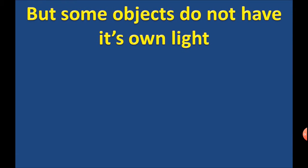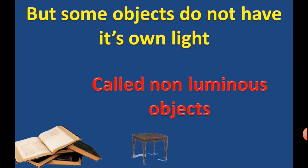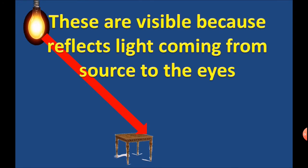But some objects do not have their own light, called non-luminous objects. Book, table, planets. These objects are visible because they reflect light coming from source to the eyes. Hence, non-luminous objects reflect the light to the eyes and we are able to see.